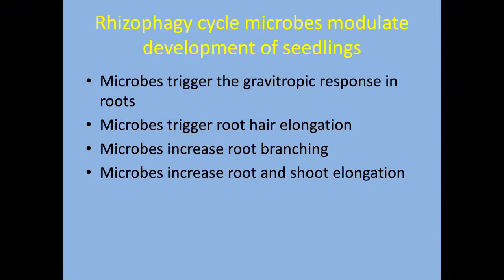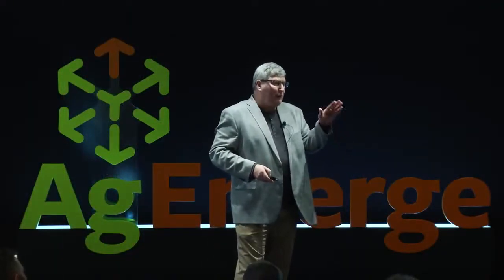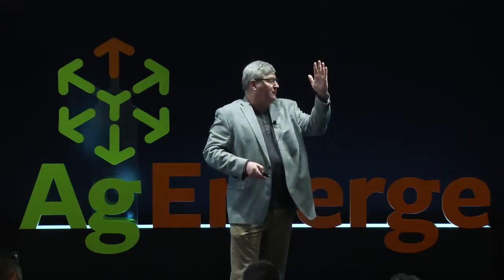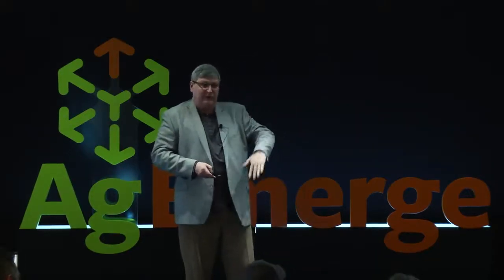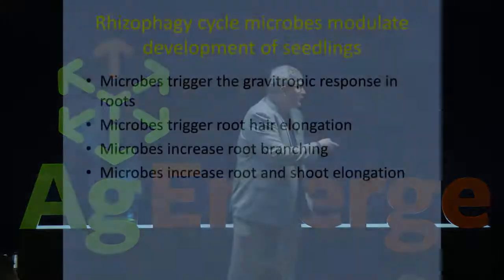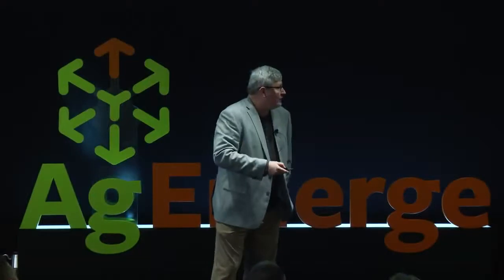The rhizophagy microbes modulate development of the plant. For example, roots don't show the gravitropic response without these microbes — with no microbes, roots grow on the surface of the soil or go into the air. When the microbes are present, roots will grow down into the soil. So the plant is waiting for those microbes to trigger it for soil penetration. Also, roots don't develop root hairs without these microbes in the cells — if there are no microbes, you get no root hairs at all.